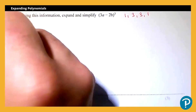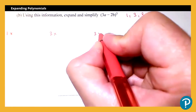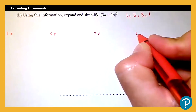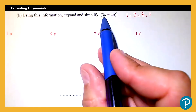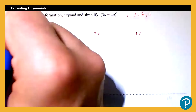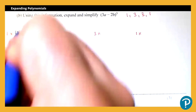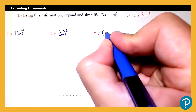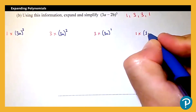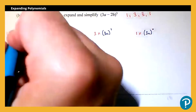Just like before, I know my first term will be 1 multiplied by something, the second 3 multiplied by something, the third 3 multiplied by something, and the last 1 multiplied by something. The first term in the bracket is 3a, so we start with (3a)³, then the power decreases: (3a)², (3a)¹, and (3a)⁰.